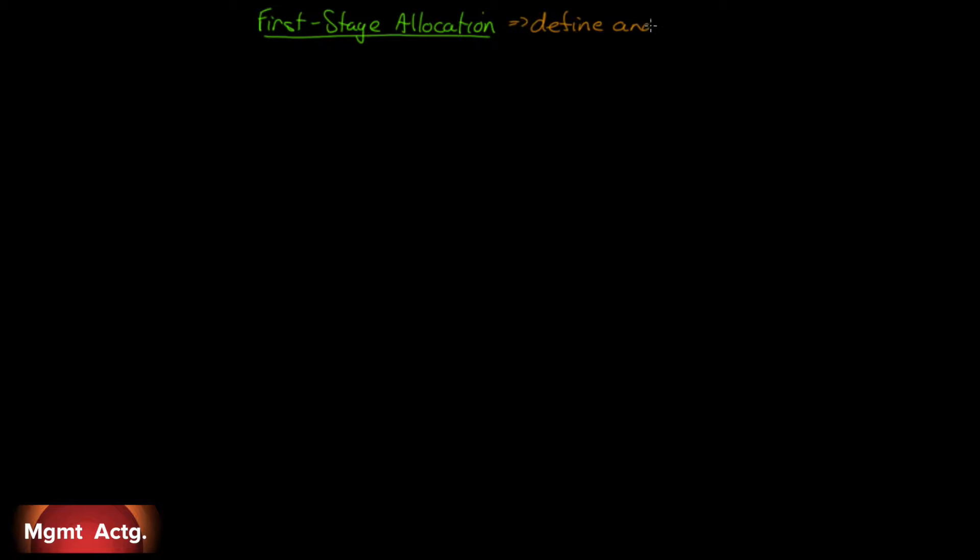This is the third part of activity-based costing. We are now going to get into the first part of the implementation, which is first-stage allocation — something that I call define and assign. If you can remember define and assign, that's first-stage allocation.